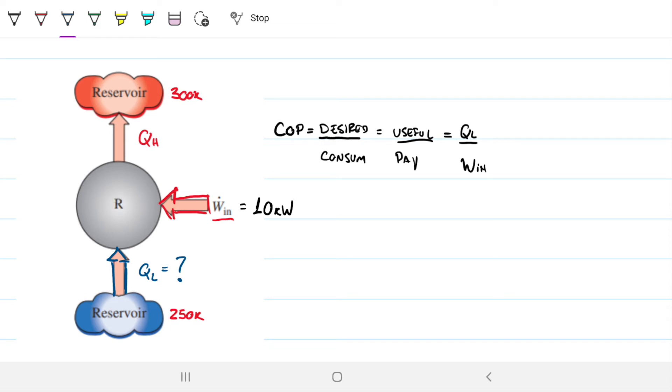Because the refrigerator is bound, right? It has to be within the boundaries of these reservoirs, because there's only so much energy you can give to this 300 Kelvin.